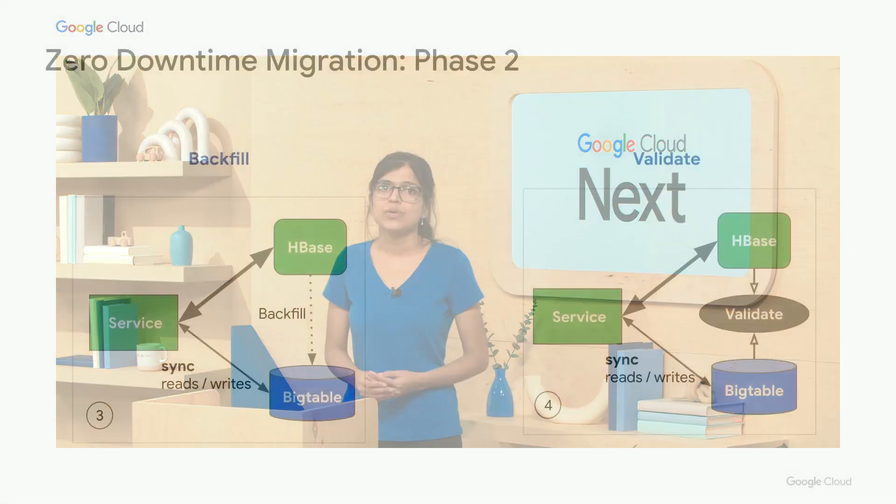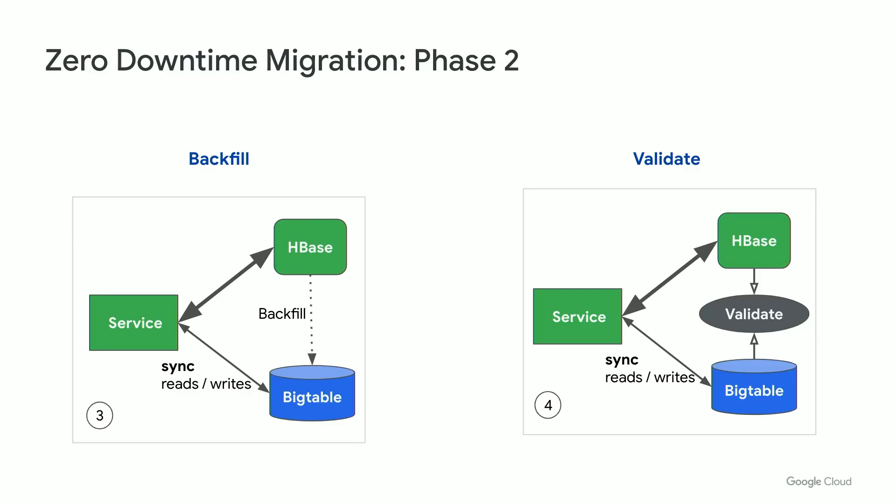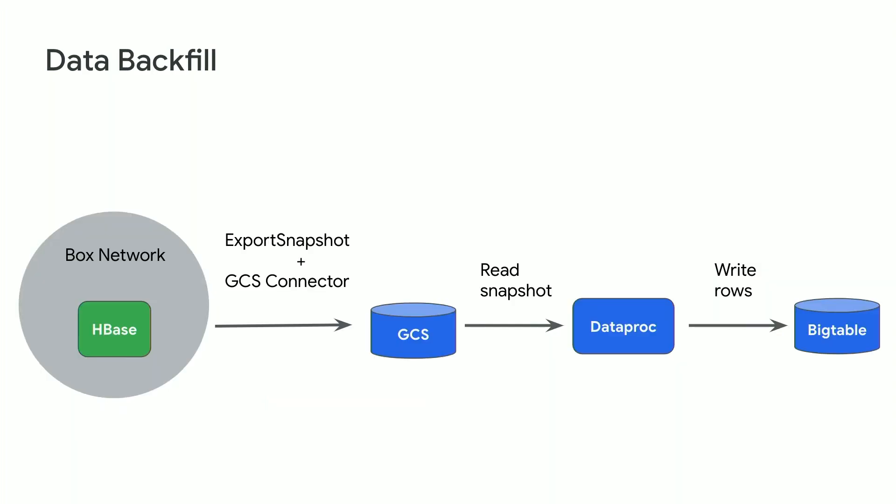In phase two, we perform backfill of old data from HBase to Bigtable and run a series of validations to ensure the data is consistent. Backfill involves three steps. First, we take a snapshot of the table on HBase. Second, we write the snapshot files to a GCS bucket — for this we used HBase's export snapshot job in conjunction with Google's open-sourced GCS connector. Finally, we load data from GCS into Bigtable using a Dataproc job, which was also open-sourced by Google.